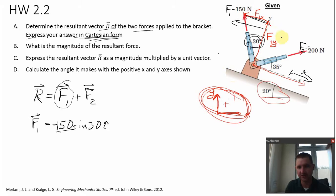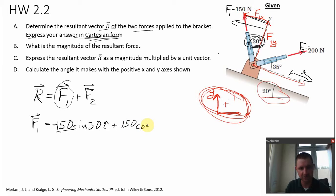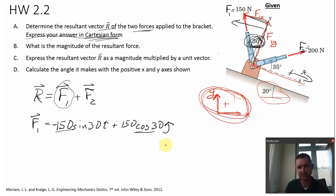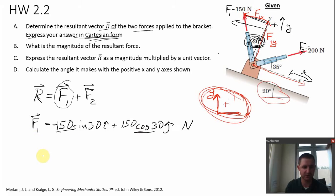Now, what about the Y component? The Y component is adjacent to the 30 degree angle, so 150 times the cosine of 30. The Y component is adjacent to the 30 degree angle, which is made with the hypotenuse. And don't forget the component — that's the J hat component. It's pointing in the positive Y direction. Don't forget units on the vector. There's F1 written in component form.